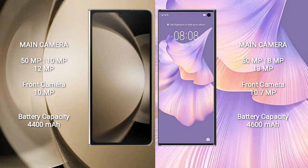Samsung Galaxy Z Fold 5 features a rear triple camera setup: 50MP plus 10MP plus 12MP, and a front camera of 10MP. Huawei Mate XS2 features a rear triple camera setup: 50MP plus 8MP plus 13MP, and a front camera of 10.7MP.